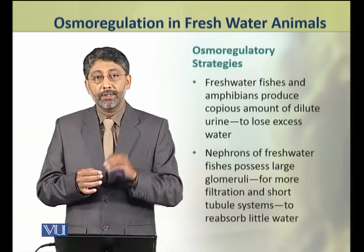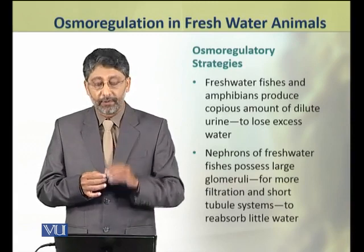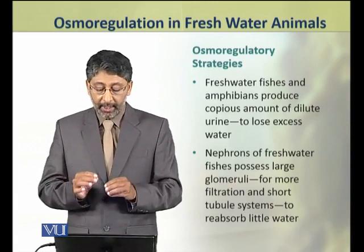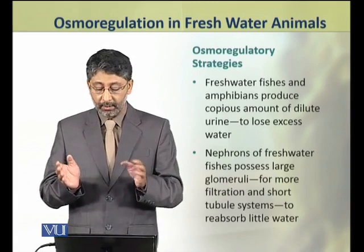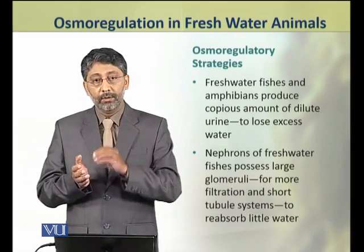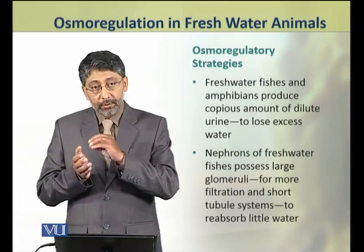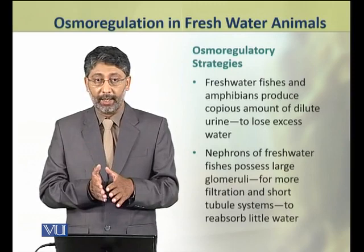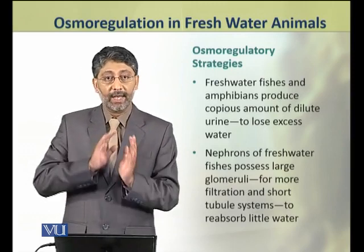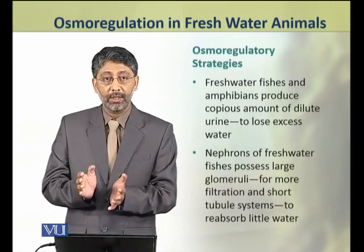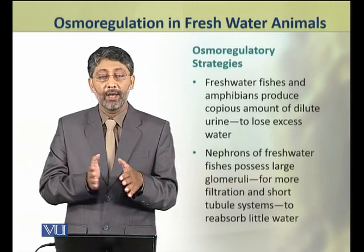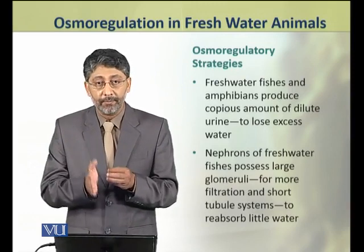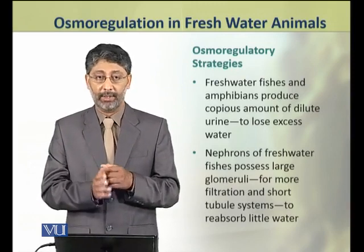The nephrons of freshwater fishes have large glomeruli and a relatively small tubular system. The large glomeruli allow more filtration, and the short tubules result in minimal water reabsorption.